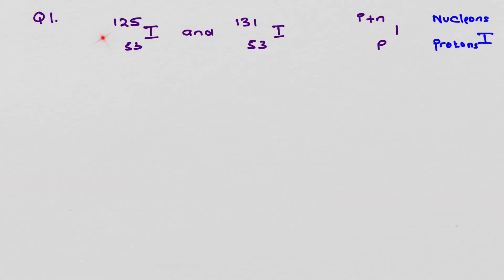Question 1. Two isotopes of iodine are iodine-125-53 and iodine-131-53. We need to determine for these two isotopes the difference between the constituents of the nuclei.